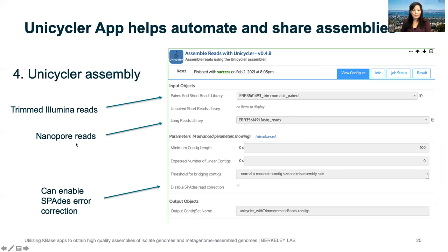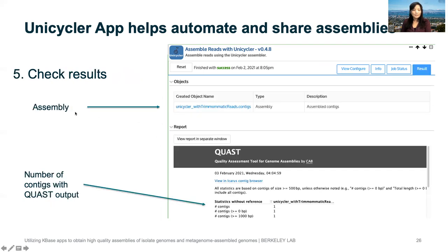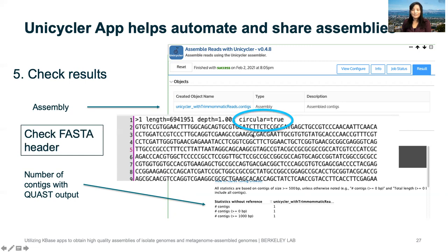You input the Illumina and Nanopore reads objects into the Unicycler app. If you're an advanced user, you can decide if you want space error correction on or off. What you get out is an assembly object, and you can download the FASTA file. John Mark also implemented a cost analysis so you can see how many contigs and the stats on the assembly. One thing not yet implemented is telling you if the genome is completely circularized, but you can check this in the FASTA header. Unicycler is in beta right now and you can try it out.